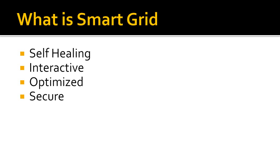Smart grid infrastructure should be resilient enough to withstand cyber attacks and physical damage. With real-time monitoring of the power system, problems can be identified immediately and resolved or isolated to reduce power disruption. Having predictive infrastructure will allow operators to identify and solve problems early, and also allow them to construct emergency plans to reduce power disruptions in natural disasters.